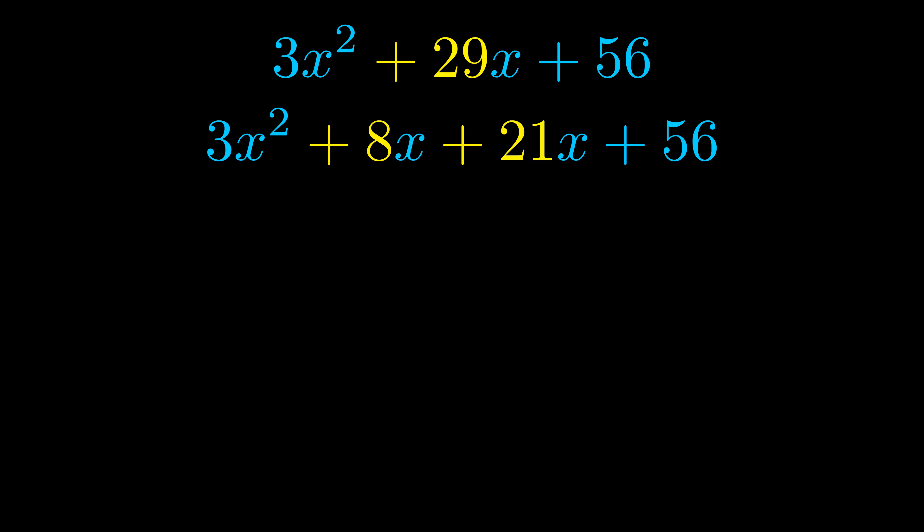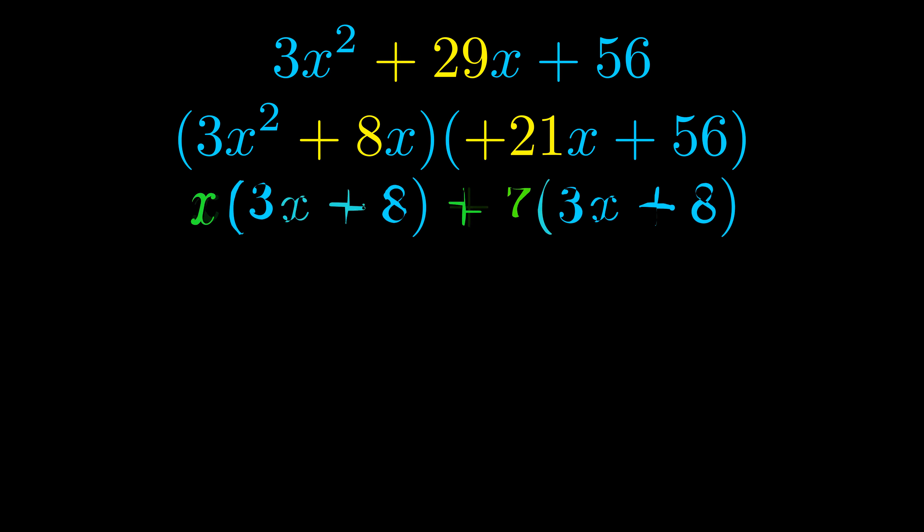Once we've done this we go ahead and put parentheses around the first term and the last term and we do that so that we can take the greatest common factor out of both terms. We can see the greatest common factor is now outside in green. Notice also how what remains inside of the parentheses is the same in both cases.